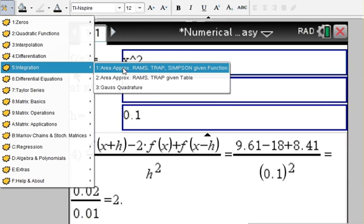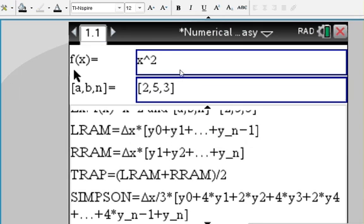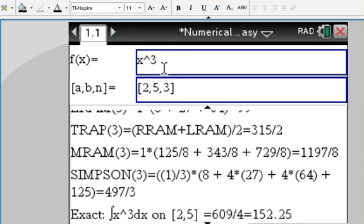Integration—we have all the Riemann sums in here, trapezoid, Simpson rules. You enter your function—x squared, let's say, or x cubed for a change. Our interval from a to b, in this case from 2 to 5, using three sub-intervals.